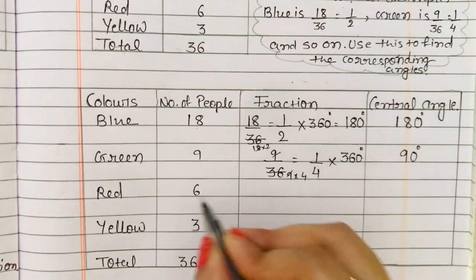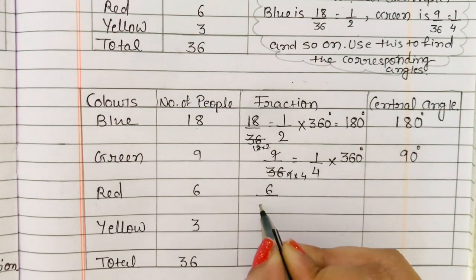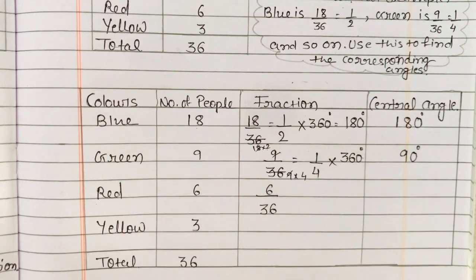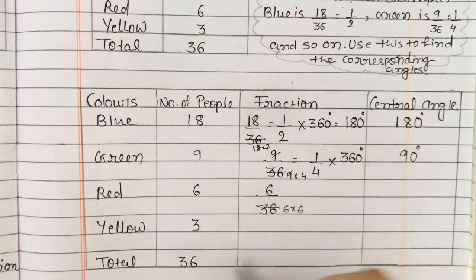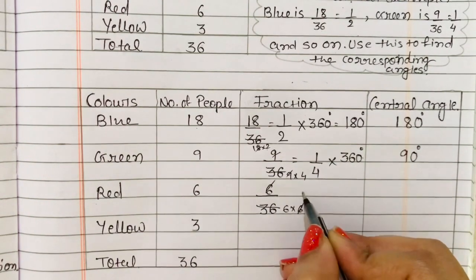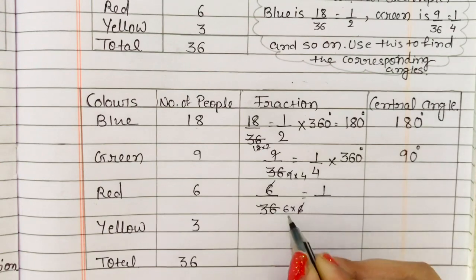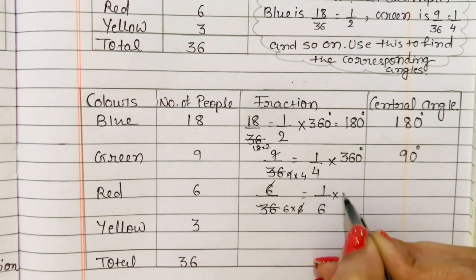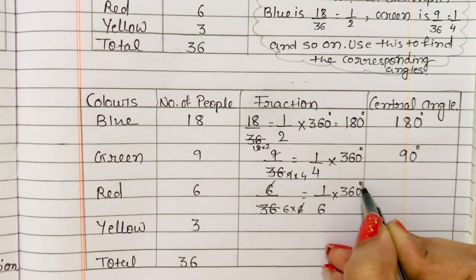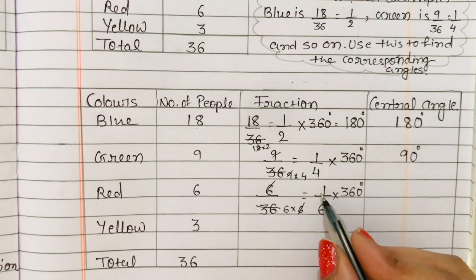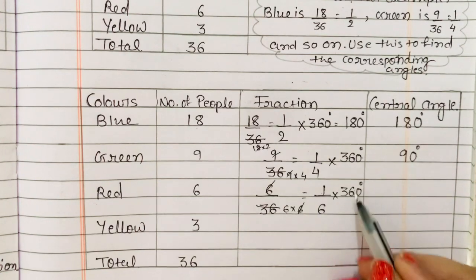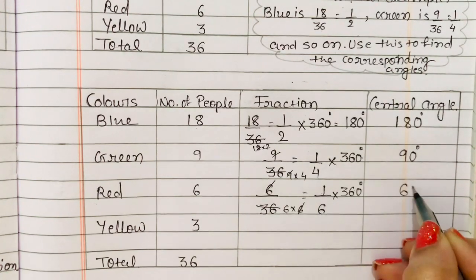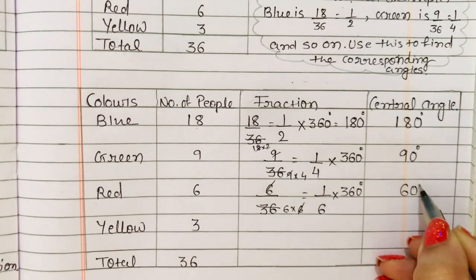For red, we have 6 upon total 36. If we cut it, 6 sixes are thirty-six, so 6 cancels. We get 1 upon 6, then multiply by 360. So 360 divided by 6 gives us 60 degrees.